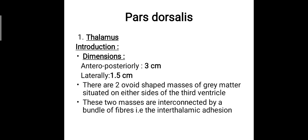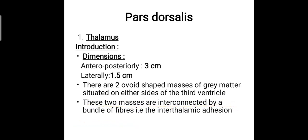Let's discuss the pars dorsalis. The first part is the thalamus — two ovoid-shaped masses of grey matter situated on either sides of the third ventricle. The dimensions are anteroposteriorly 3 cm in length and laterally 1.5 cm in width. These two masses are interconnected by a bundle of fibres called the interthalamic adhesion.